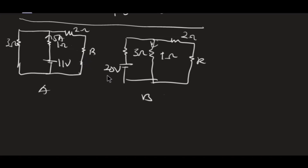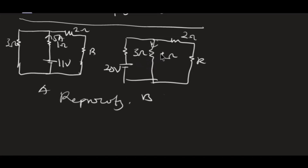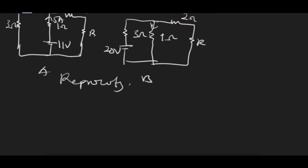In figure A there is already a known current in the 1-ohm which is 5 amperes. We want to make figure B look like figure A and use proportion. Using reciprocity theorem, the 20 volts should come to this branch to make B look like A. For 20 volts to move to this branch, the current in that branch needs to move to the other side while the 20 volts comes here.